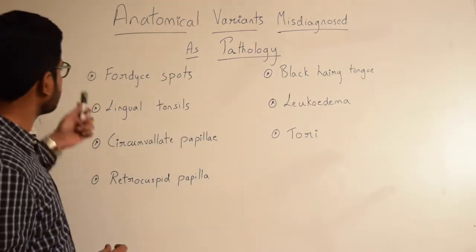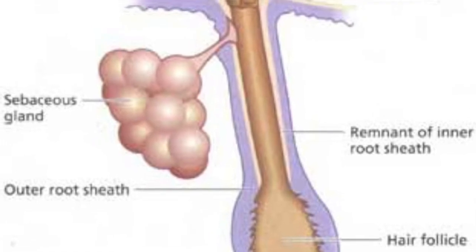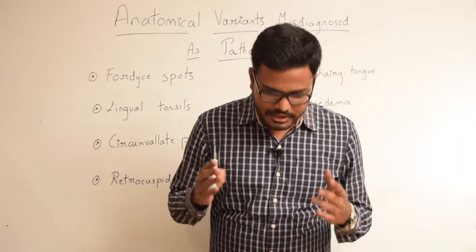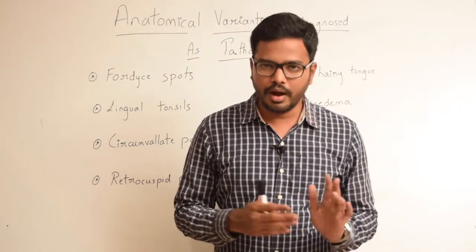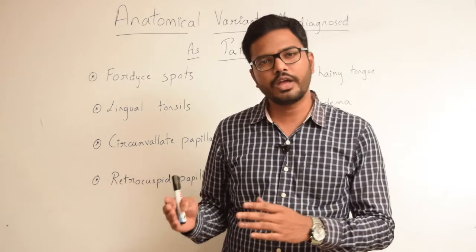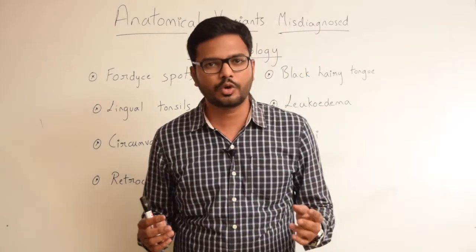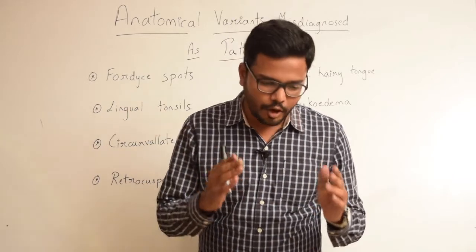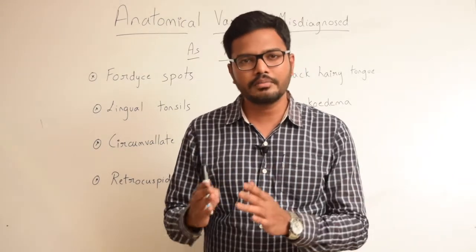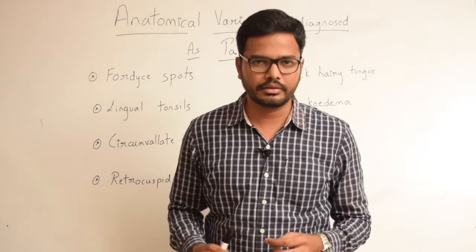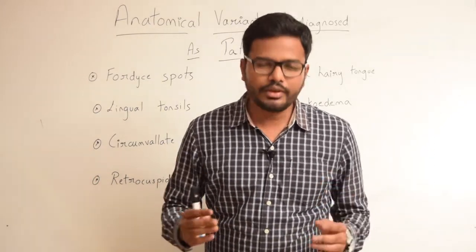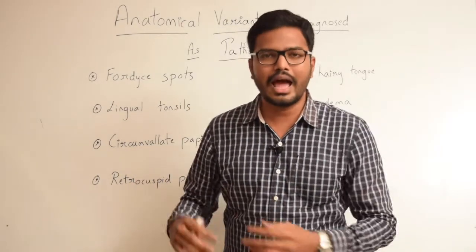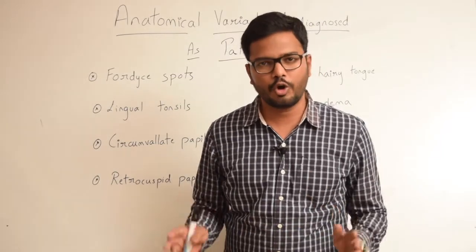First, coming to Fordyce spots. Usually sebaceous glands are associated with hair follicles and have a specific function. Sebaceous glands are absent on palms as well as on the sole. However, we have ectopic sebaceous glands located in either buccal or labial mucosa within the oral cavity. They often appear as white or cream-colored elevations of roughly 0.5 mm diameter. They often appear numerous and prominent and are misdiagnosed as some kind of pathology — in fact, they are normal.